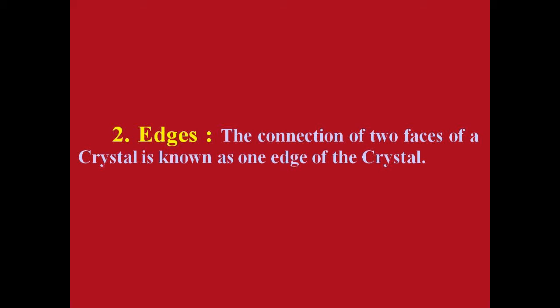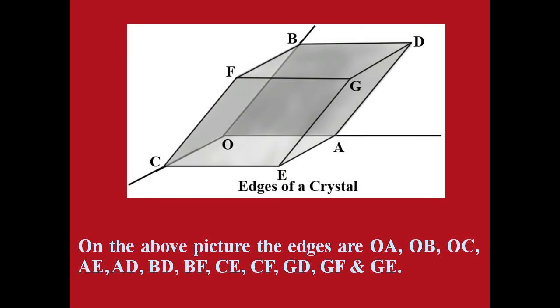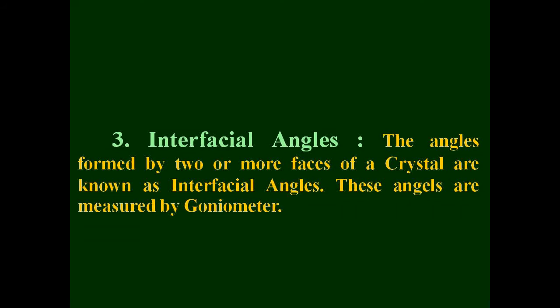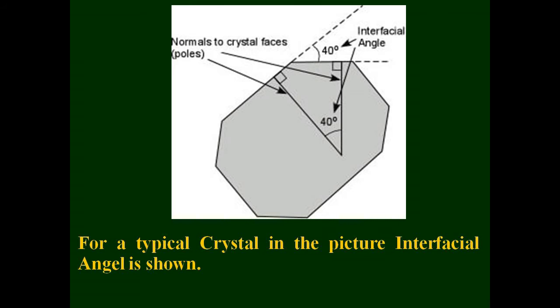Edges: the connection of two faces of a crystal is known as one edge of the crystal. In the picture, OAECBDGF is a typical crystal, and the edges are OA, OB, OC, AE, AD, BD, BF, CE, CF, GD, GF, and GE. Interfacial angles: the angles formed by two or more faces of a crystal are known as interfacial angles. These angles are measured by a goniometer. In the picture, an interfacial angle is shown.